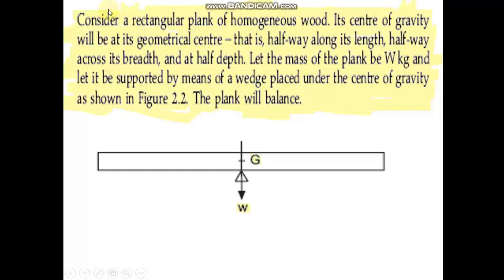To begin with, let us consider a rectangular plank of homogeneous wood. Homogeneous means the wood is of same material and same properties throughout. Its centre of gravity will be at its geometric centre, that is half of its length, breadth and depth. If you consider a box-shaped, three-dimensional wooden object, its centre of gravity will be right at the centre: L by 2, B by 2 and D by 2.